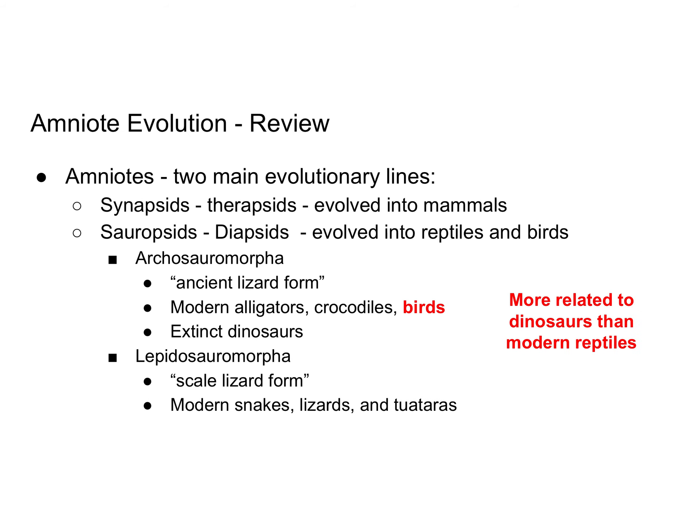In this video, we're going to talk about the Aves, which are the birds. To recap, the amniotes are divided into synapsids and sauropsids. The sauropsids are further classified into the diapsids, which have evolved into reptiles and birds. The Archosauromorpha includes dinosaurs, alligators, crocodiles, and birds. So birds are actually considered a type of reptile, and they are really descended from dinosaurs.